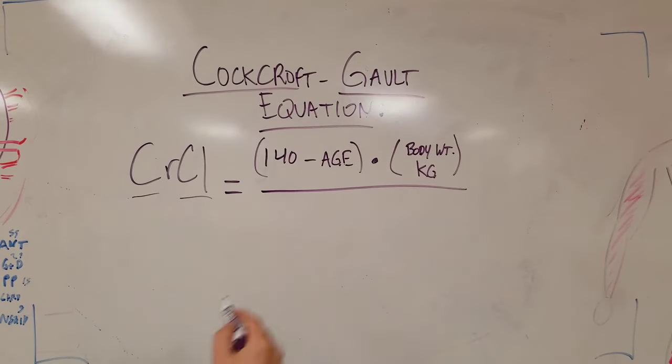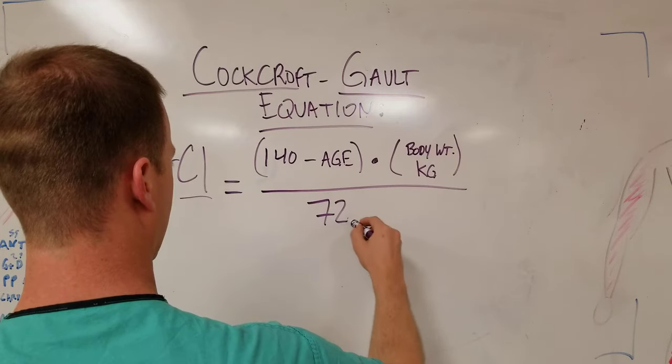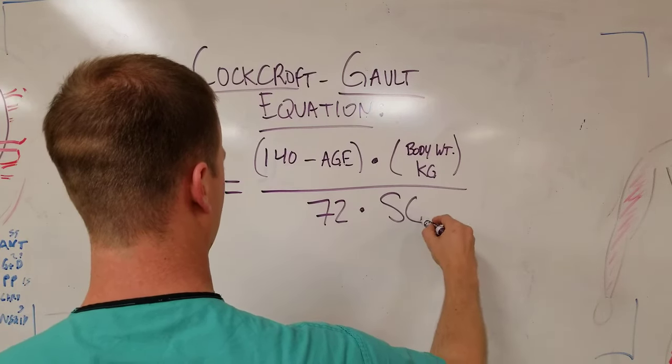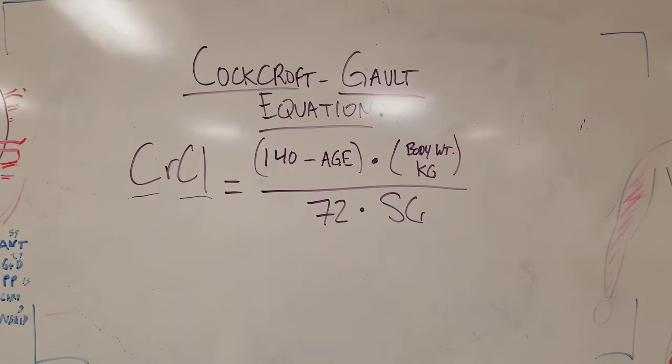On the bottom, you're gonna take a constant, which is 72, and you're gonna multiply that times the patient's serum creatinine. So 1.0 or 4.6 or what have you.